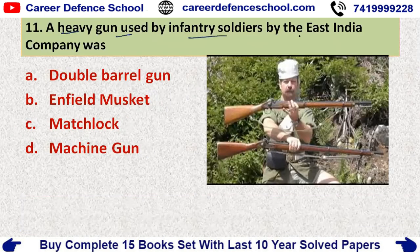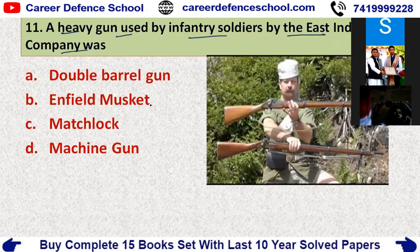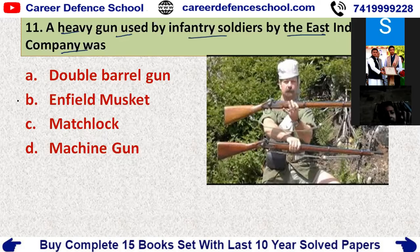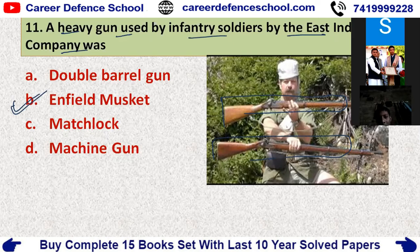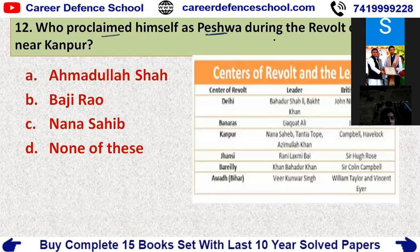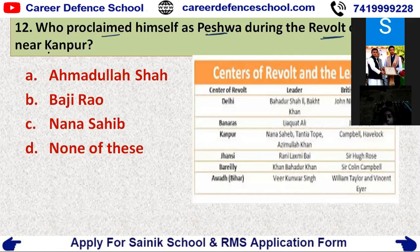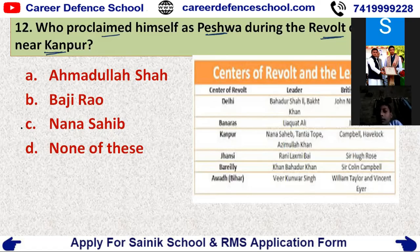A heavy gun used by infantry soldiers by the East India Company — the options are double barrel gun, Enfield musket, matchlock, or machine gun. The correct answer is option C — the Enfield musket. This was the heavy gun used by the East India Company.